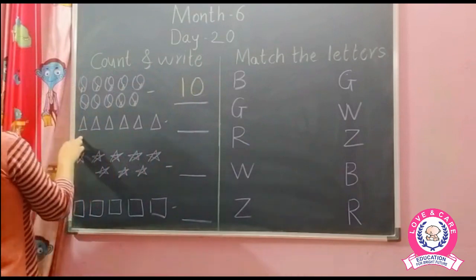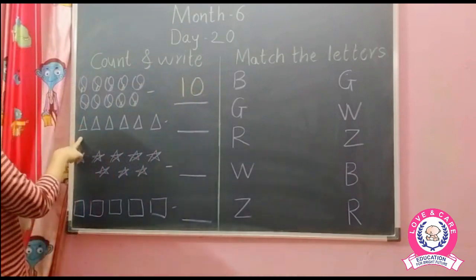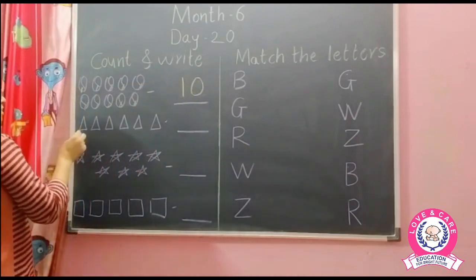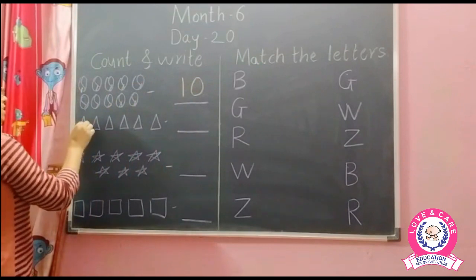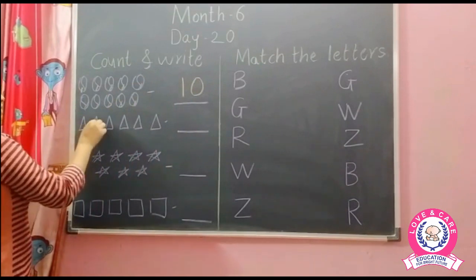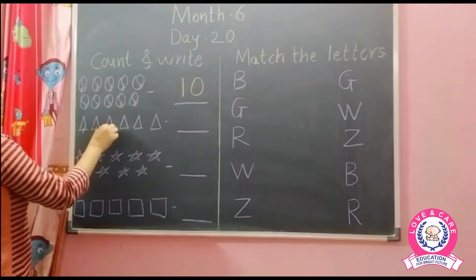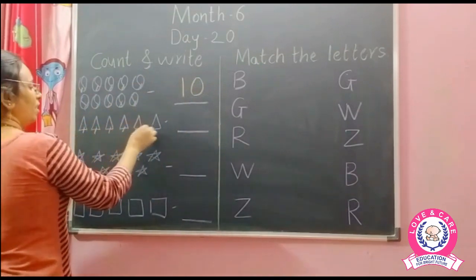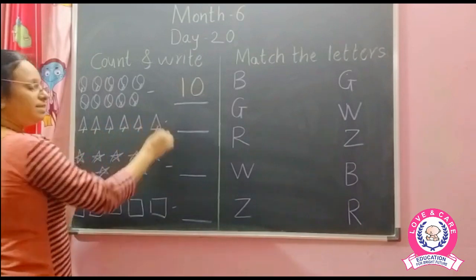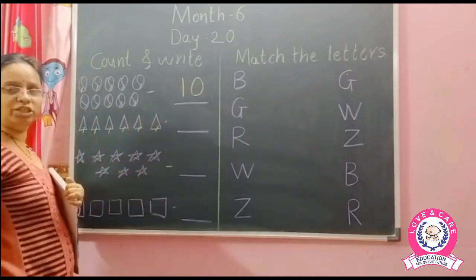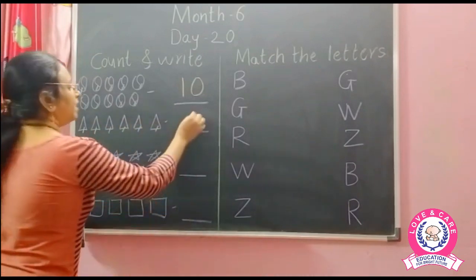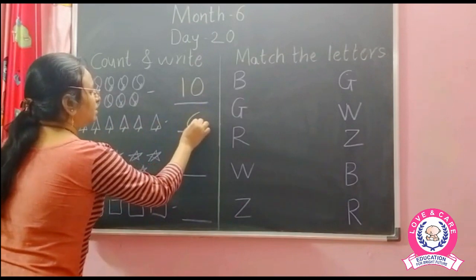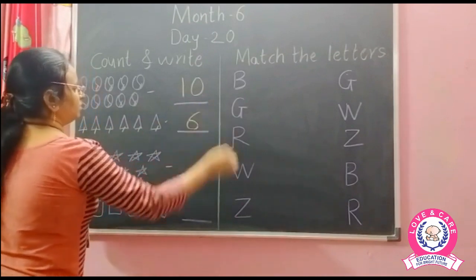Next, what is this? Triangle. So how many triangles? Count the triangles: 1, 2, 3, 4, 5 and 6. How many triangles? 6. Write here number 6. Good.